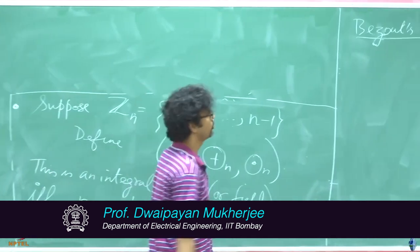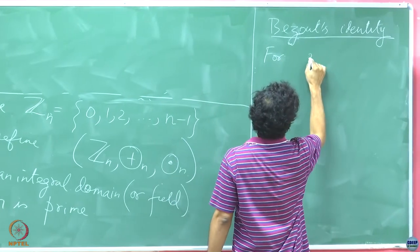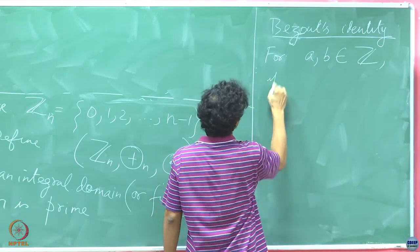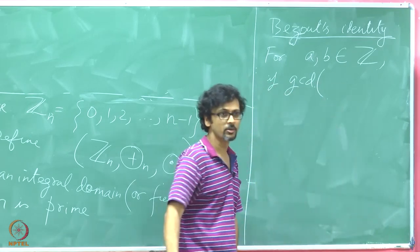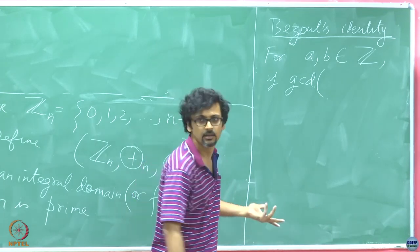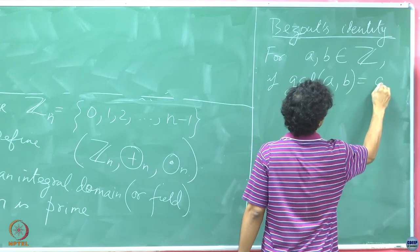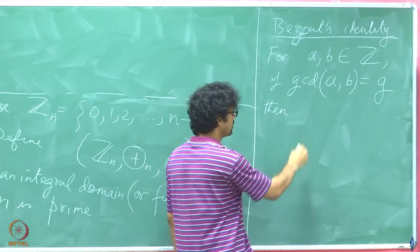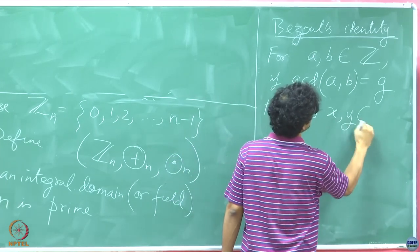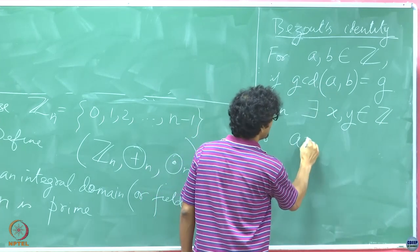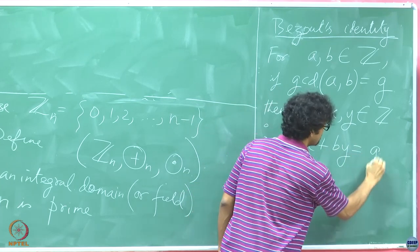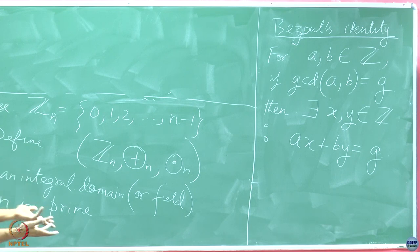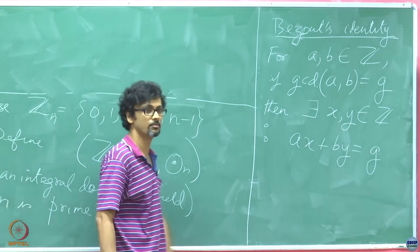It says that suppose for a, b belonging to the set of integers, if GCD, the greatest common divisor or you might have come across this as the highest common factor HCF, the GCD of a, b is equal to g, then there exists x, y in the set of integers such that ax plus by must be equal to g. You will always be able to find two integers x and y such that ax plus by will lead you to that greatest common divisor of those two numbers.